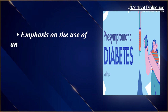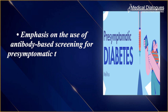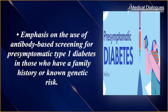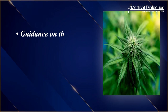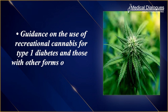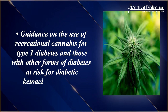Emphasis on the use of antibody-based screening for pre-symptomatic type 1 diabetes in those who have a family history or known genetic risk. Guidance on the use of recreational cannabis for type 1 diabetes and those with other forms of diabetes at risk for diabetic ketoacidosis.